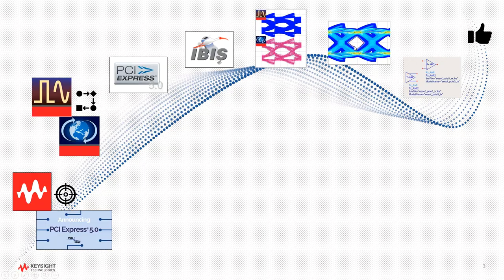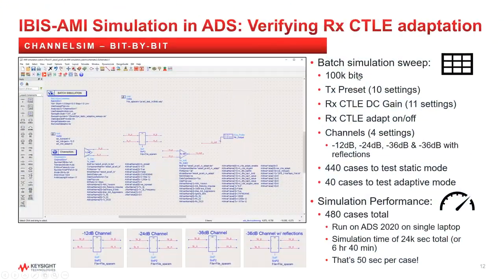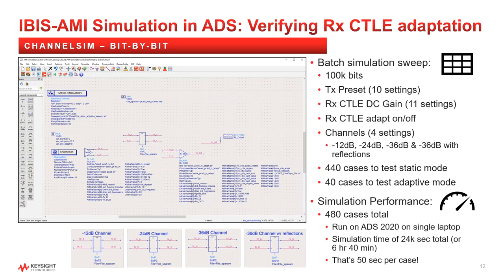Let's begin. So we want to understand the IBIS-AMI bit array performance versus channel variation. The ADS schematics and setup is shown here.